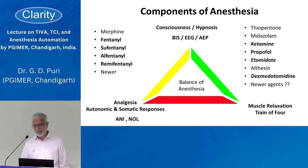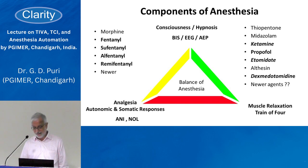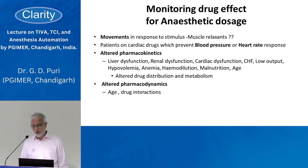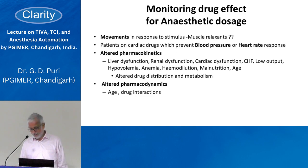For different components of anesthesia, different drugs are used. If you are using propofol for hypnosis with fentanyl, you need to understand that fentanyl also interacts with propofol — so the propofol concentration required for a given effect will decrease. I won't go into muscle relaxation here — that's relatively straightforward. I'll focus on analgesic and hypnotic components. The problem with muscle relaxation is once movement is abolished, you can only rely on blood pressure, heart rate, predicted plasma concentration, or depth-of-anesthesia monitoring.